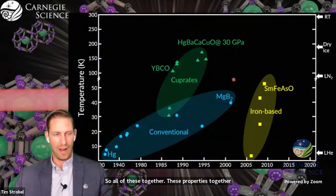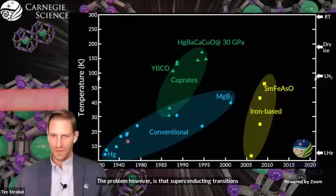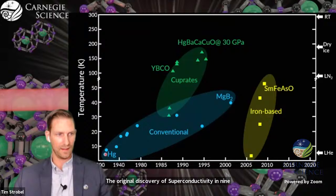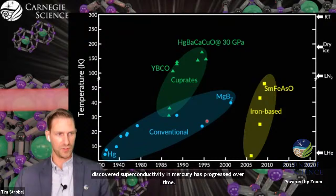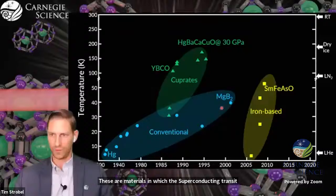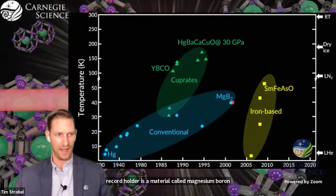The problem, however, is that superconducting transitions are often observed at very low temperatures. The original discovery of superconductivity in 1911 by Onus, who was liquefying helium at 4 Kelvin and discovered superconductivity in mercury, has progressed over time. The current record holder is a material called magnesium diboride, which has a transition at 39K at 1 atmosphere.